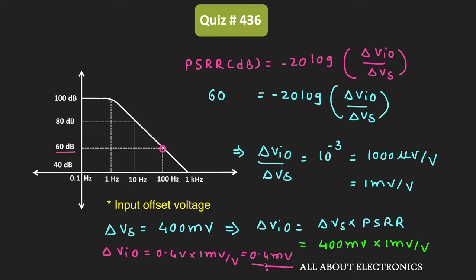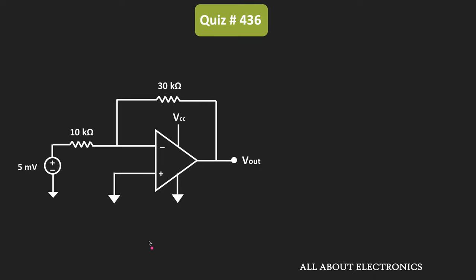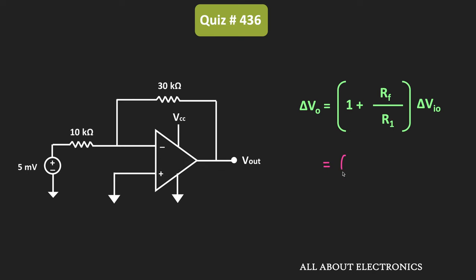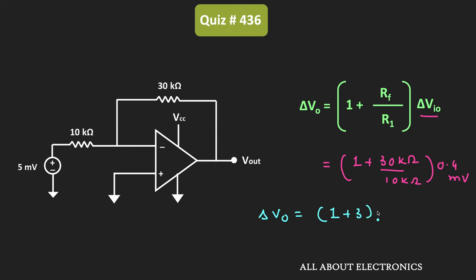At the output, this change in input offset voltage will get amplified by the noise gain of the op-amp. The op-amp is configured in the inverting configuration, but the noise gain is 1 + Rf/R1. So the change in output voltage equals (1 + 30 kΩ / 10 kΩ) × delta Vio = (1 + 3) × 0.4 mV. Therefore, the overall change in output voltage is equal to 1.6 mV.